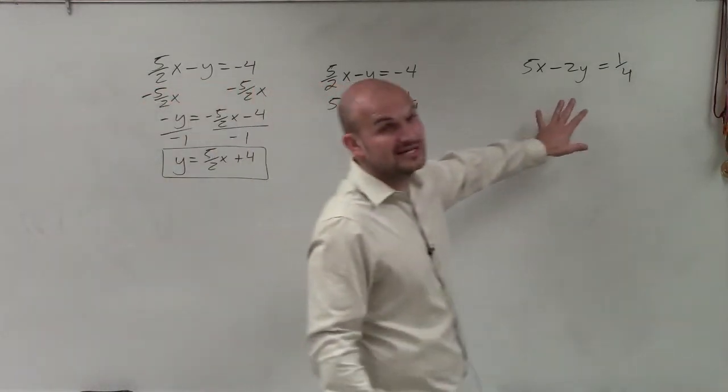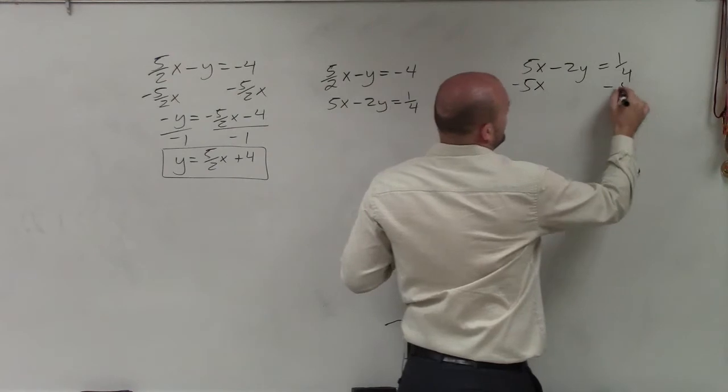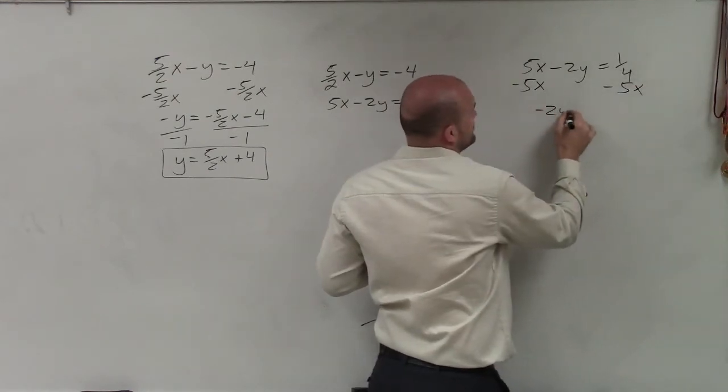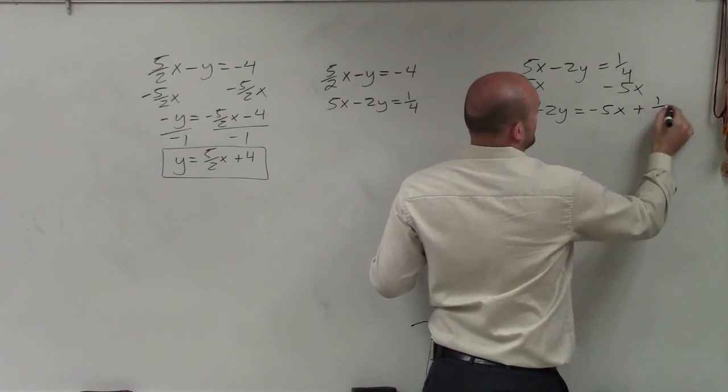Now, the next thing I do is I need to isolate this equation. So again, I'm going to set it in slope intercept form. So I have now negative 2y equals negative 5x plus 1 fourth.